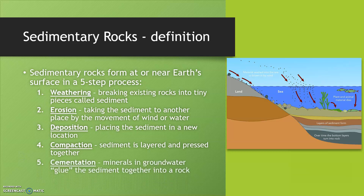Finally, cementation happens. This is when minerals and groundwater that's moving around act like glue and stick the sediment together, and it finally turns into a rock. It has to go through all five of these steps in order to change from one type of rock into a sedimentary rock.